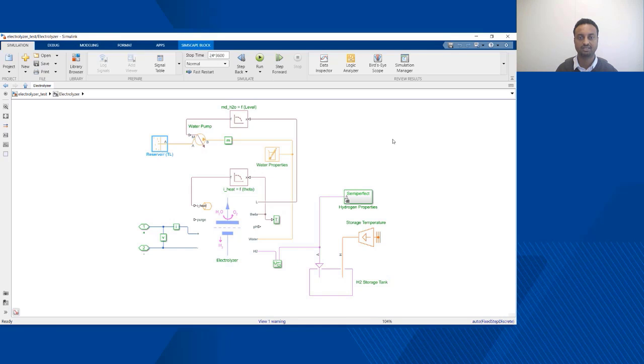Let's look at how the electrolyzer is implemented in detail. One thing we can see is that this model is constructed from components that span a number of engineering disciplines and it's indicated by the different colors used in the model. For example we can see the electrical domain in blue, the thermal liquid domain in light orange, and then a purple color indicating the gas domain.